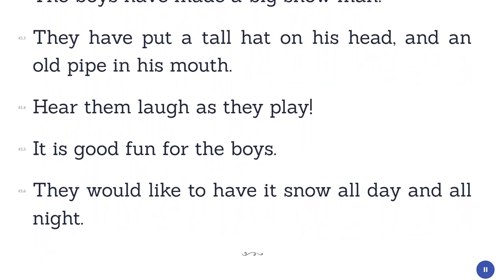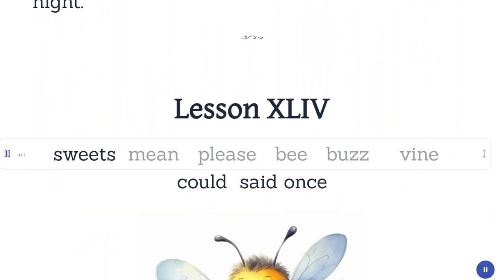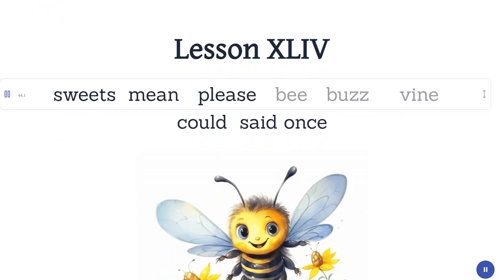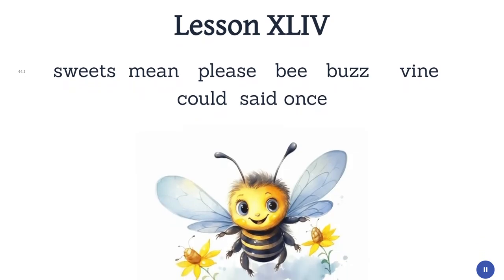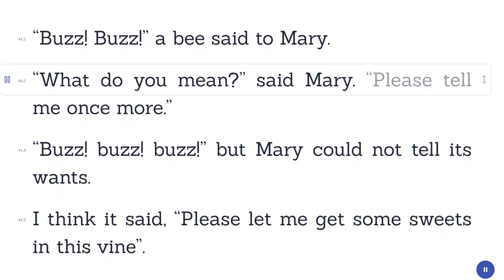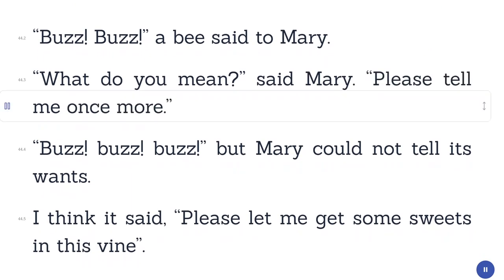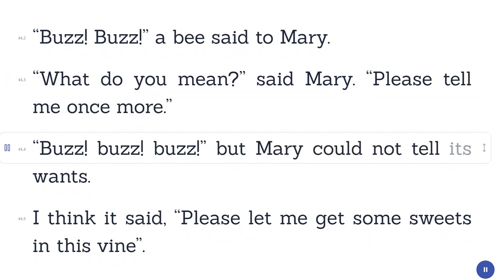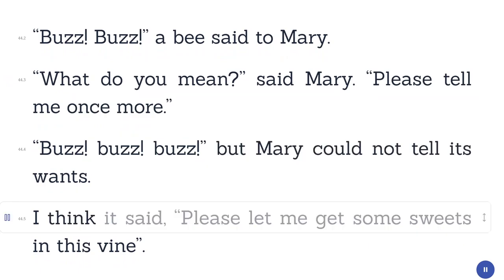Lesson 44. Sweets. Mean. Please. Be. Buzz. Vine. Could. Said. Once. Buzz, buzz, a bee said to Mary. What do you mean? Said Mary. Please tell me once more. Buzz, buzz, buzz. But Mary could not tell what it said once. I think it said: Please let me get some sweets in this vine.